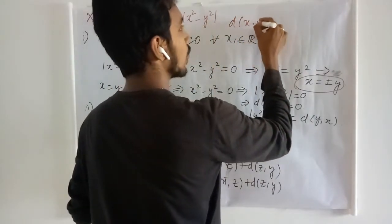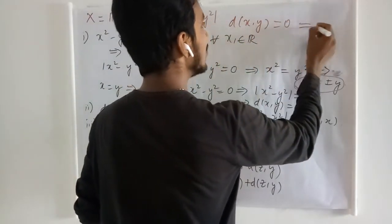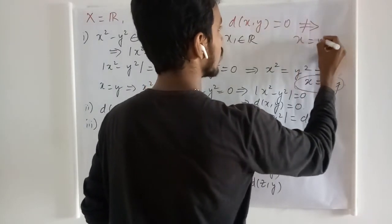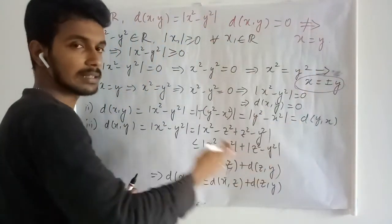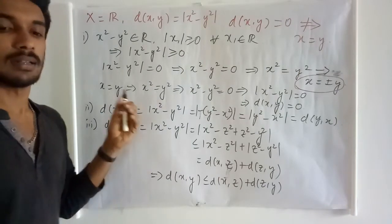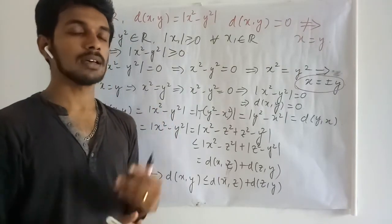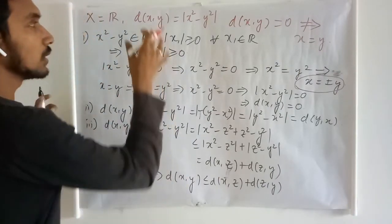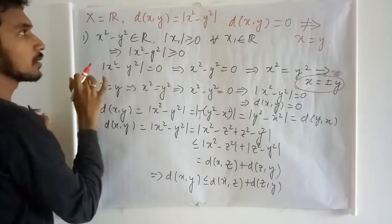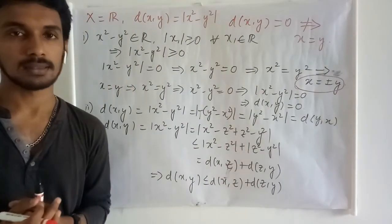d of x comma y equals zero need not imply x and y are the same. That is exactly happening here, and this is an example of a semi-metric. So with this semi-metric, this becomes a semi-metric space. Thank you.